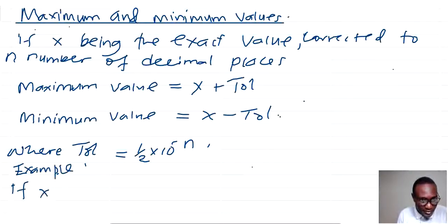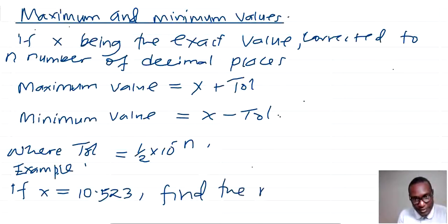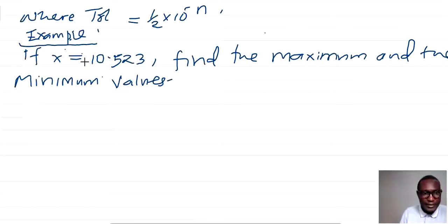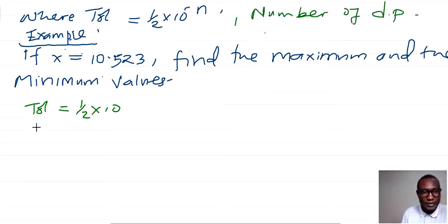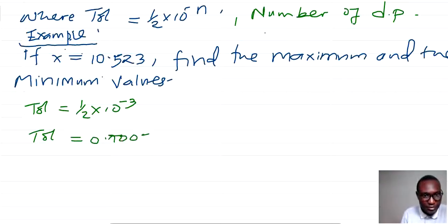As a recap: if x is equal to 10.523, find the maximum and the minimum values. This is our exact value, so we need to get the tolerance. Tolerance is equal to a half times 10 to the power negative n, where n stands for the number of decimal places. Here we have 3 decimal places, so this is going to be power negative 3, and our tolerance is 0.0005.